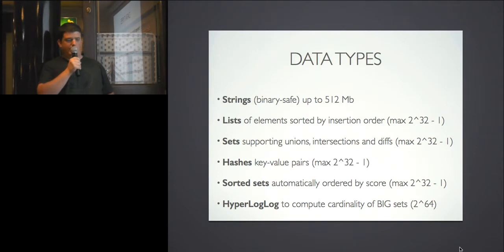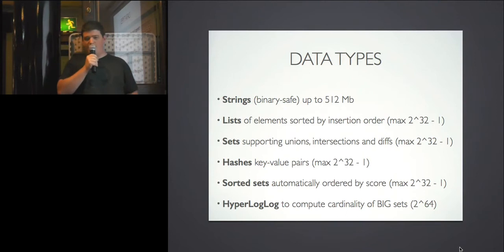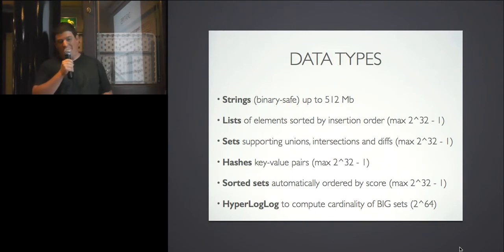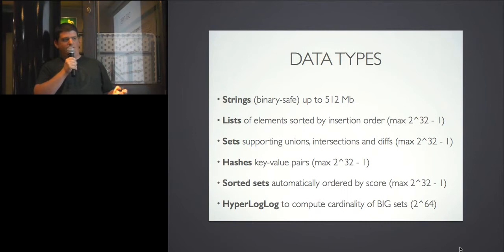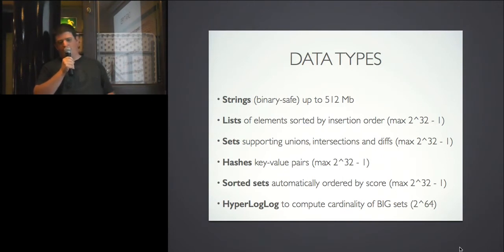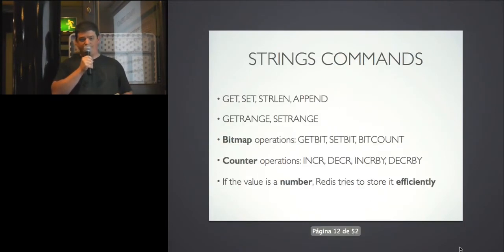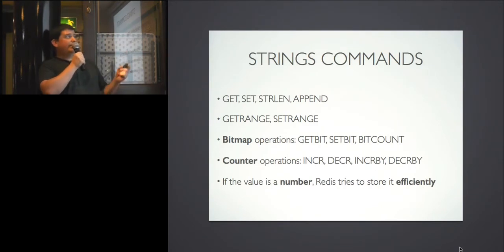And there's HyperLogLog, introduced in Redis 2.8.12. They don't care much about version semantics — they even make jokes about it. This structure is only useful to compute cardinality of very big sets — think 2 to the power of 64. If you want to count how many different items you have in such a structure, you need a lot of memory; but HyperLogLog lets you do that with a small percentage of error but very memory-efficiently. Redis is all about optimizing memory.